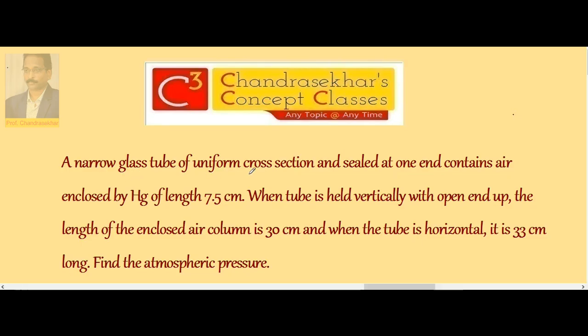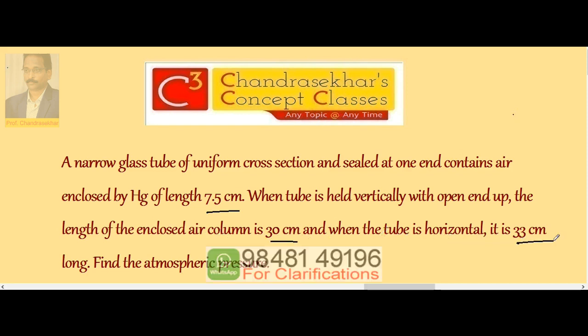A narrow glass tube of uniform cross section and sealed at one end contains air enclosed by mercury of length 7.5 cm. When the tube is held vertically with open end up, the length of the enclosed air column is 30 cm and when the tube is horizontal it is 33 cm. Find the atmospheric pressure.